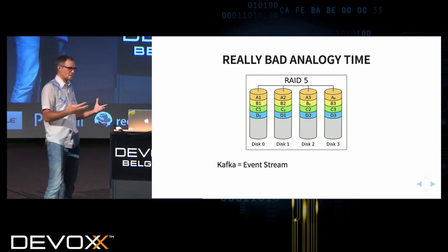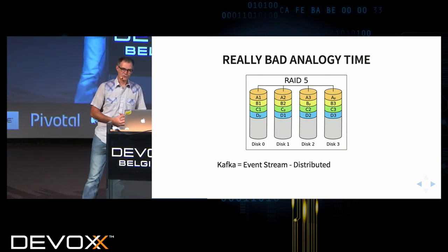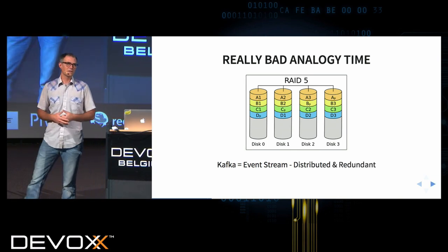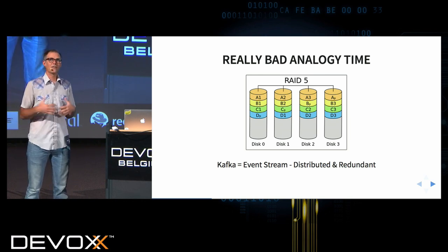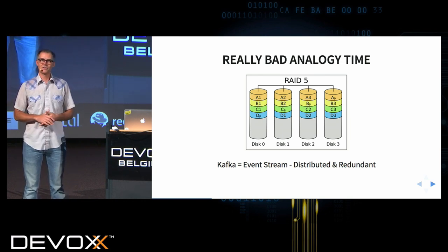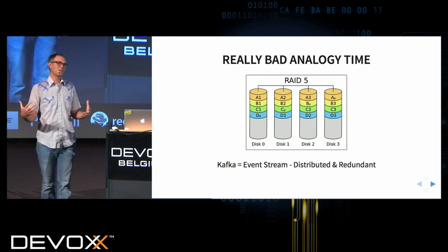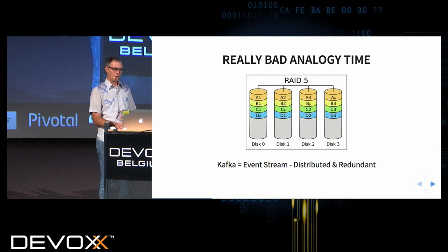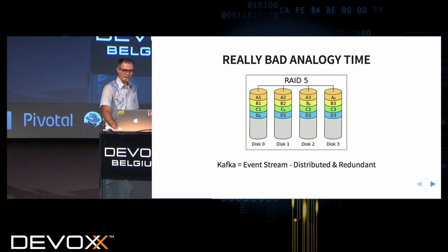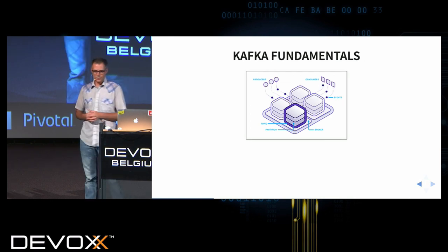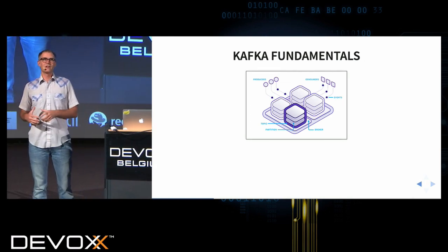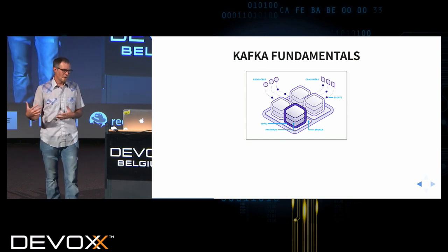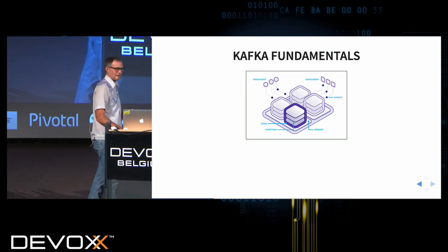How this relates to Kafka: I look at Kafka as being like the RAID 5 for event streams. It's a breakthrough in how we do event streaming technology that takes some of those ideas from RAID 5. It's distributed out of the box and it's redundant — those are the two key values of Kafka that make it unique in the event streaming world. We get distributed and redundancy without making traditional sacrifices.